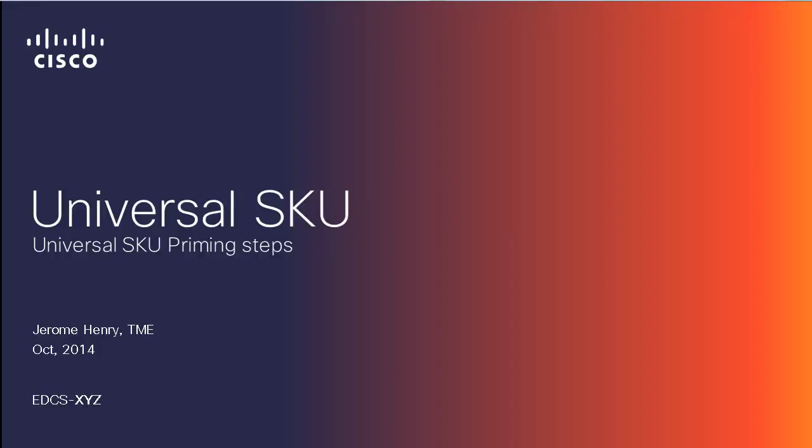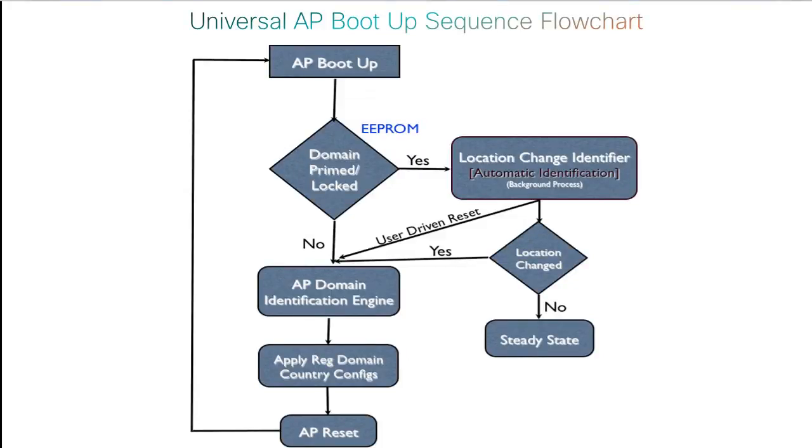Hello and welcome to this video on Cisco wireless. In this video I'd like to show you how to use the Cisco access point universal SKU and Cisco Air Provision to dynamically provision the country to your access point. The logic of the universal SKU is that you do not need to buy a localized access point — you can buy a universal access point and provision the country dynamically from other access points around or from your controller.